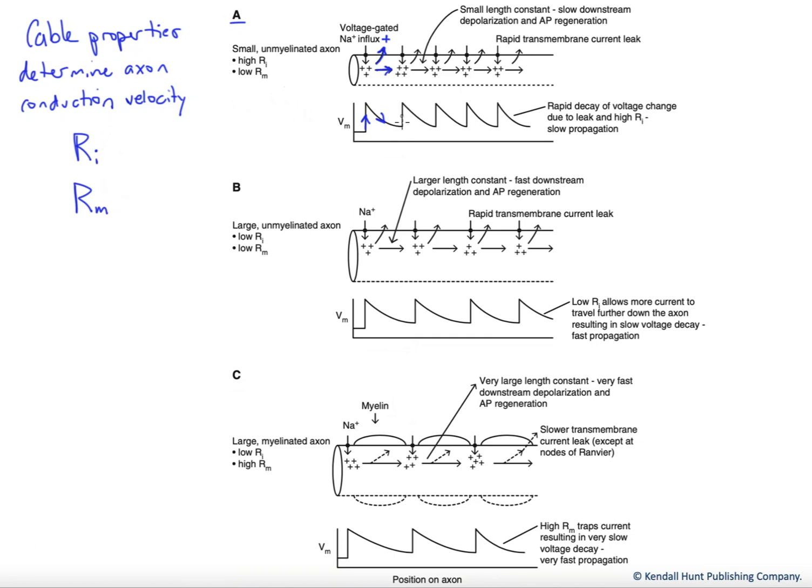That means we need to regenerate new action potentials very close together along the axon. And that slows propagation, because the ion fluxes through the voltage-gated channels is actually a fairly slow process. And so we have to keep regenerating numerous times this electrotonic current.